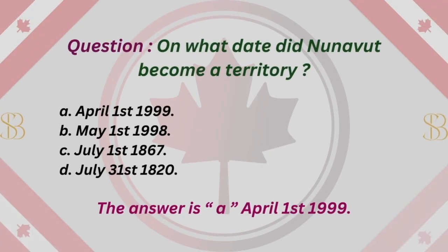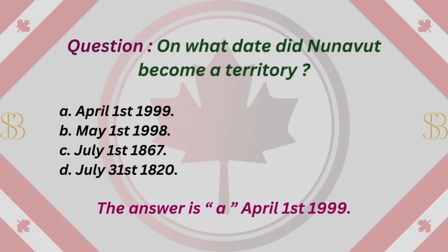Question: On what date did Nunavut become a territory? A. April 1, 1999. B. May 1, 1998. C. July 1, 1867. D. July 31, 1820. The answer is A. April 1, 1999.